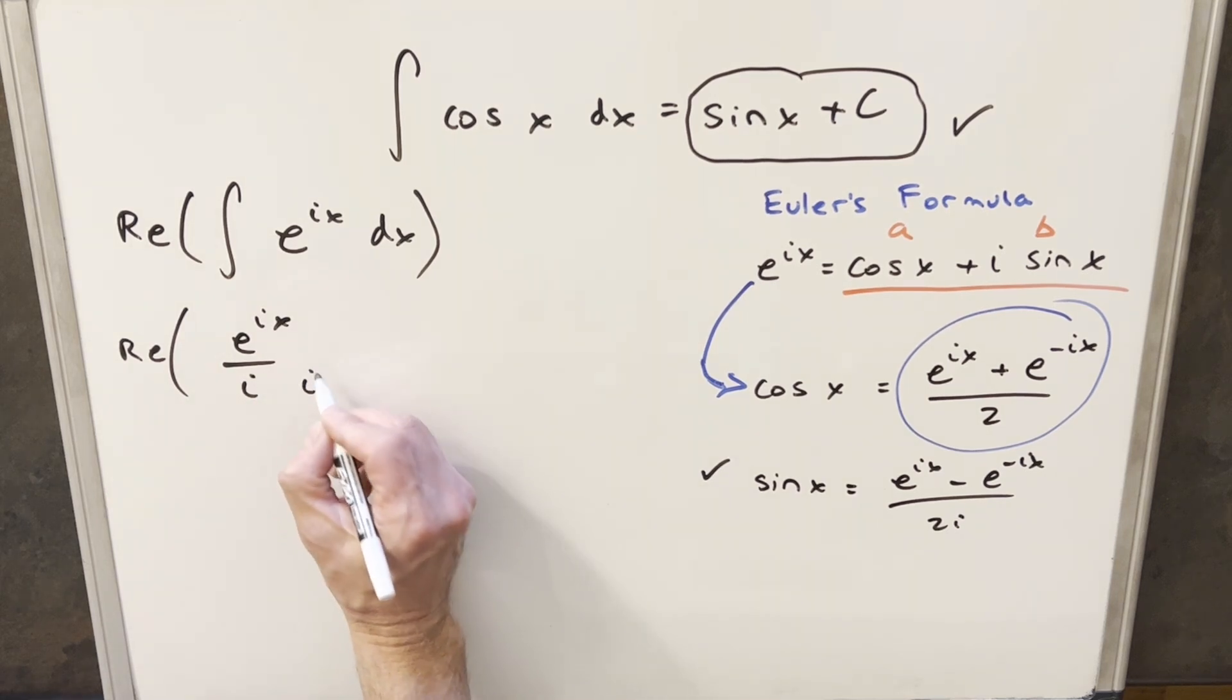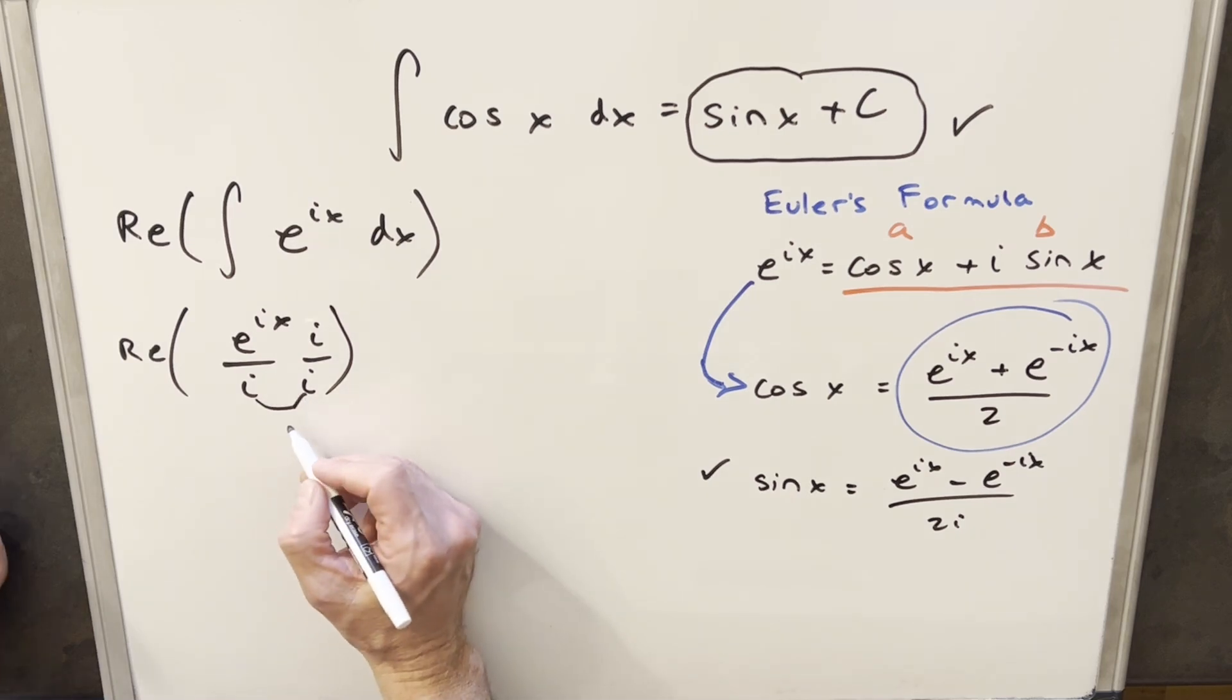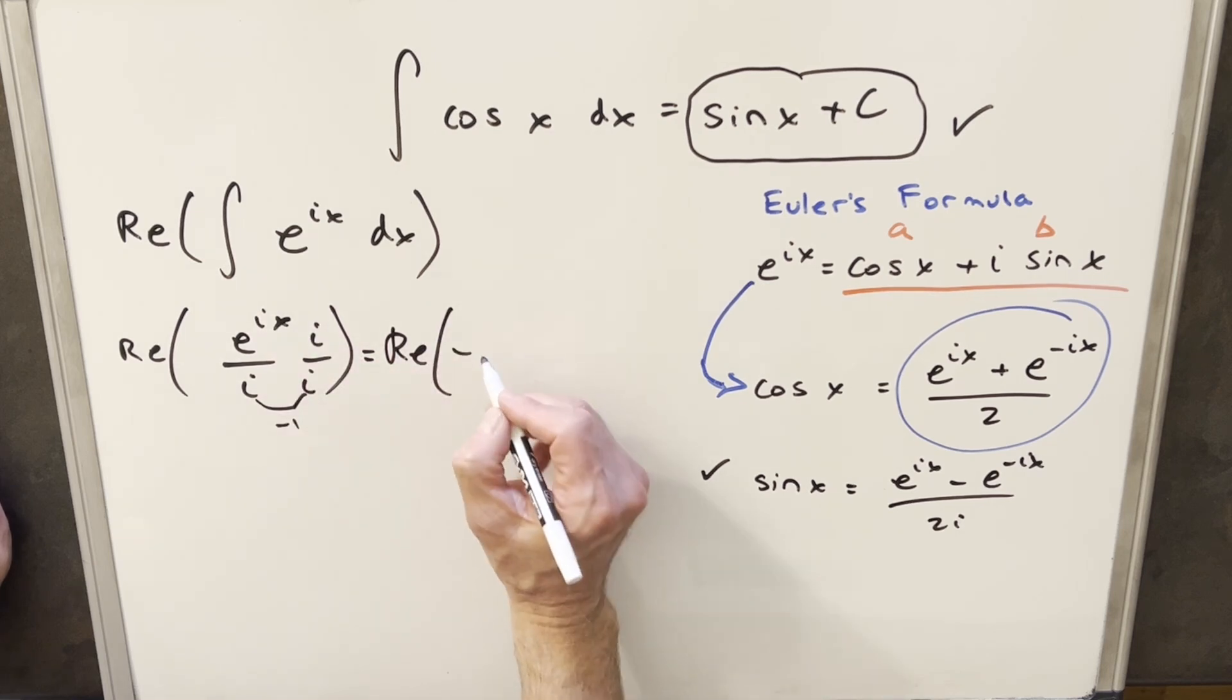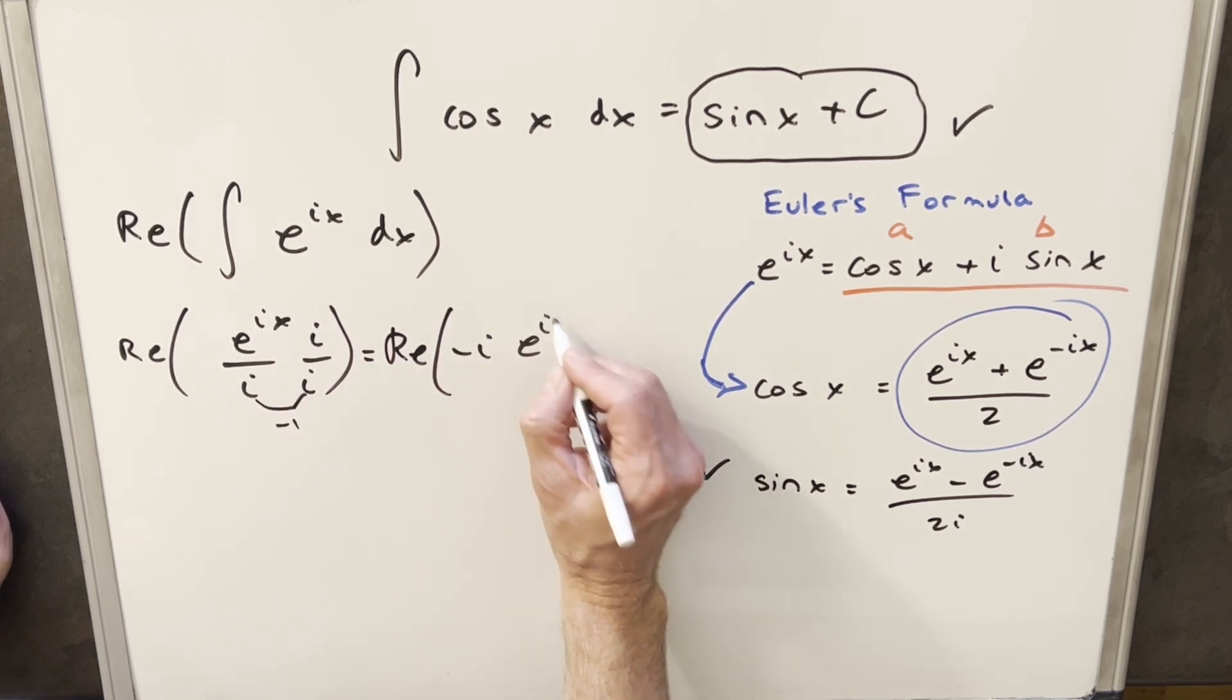But what I can do is rationalize this to get i out of the denominator. But then i times i is just going to be minus one. So I can rewrite this again and write it as, we'll bring the i out front, so I'll write this as minus i e^(ix). But then at this point, we can just notice that e^(ix) is actually the exact same thing as Euler's formula.